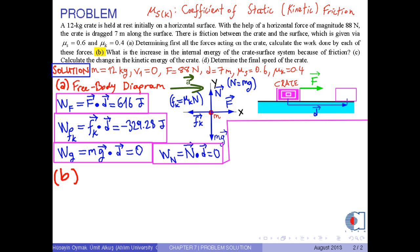Part B: What is the increase in the internal energy of the crate-surface system because of friction? We know that the increase in the internal energy is equal to the absolute value of the work done by the frictional force. Therefore, we write delta E thermal equals absolute value of W Fk, which is approximately 329 joules.